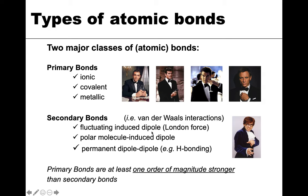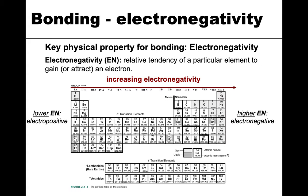We're going to define a dipole and talk about the different types of interactions those dipoles can have. To discuss the type of bonding we're dealing with, we need to revisit electronegativity, which I mentioned last lecture. Electronegative elements tend to gain or attract electrons — those are the elements on the right side of the periodic table. The electropositive ones have lower electronegativity values (abbreviated EN). The general trend is that electronegativity increases to the right and also increases going up the periods.